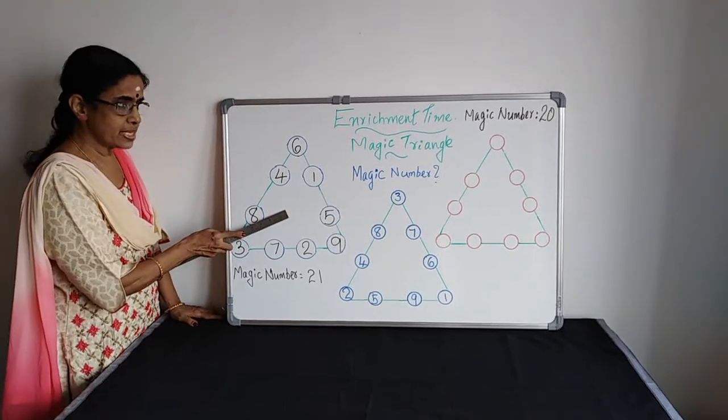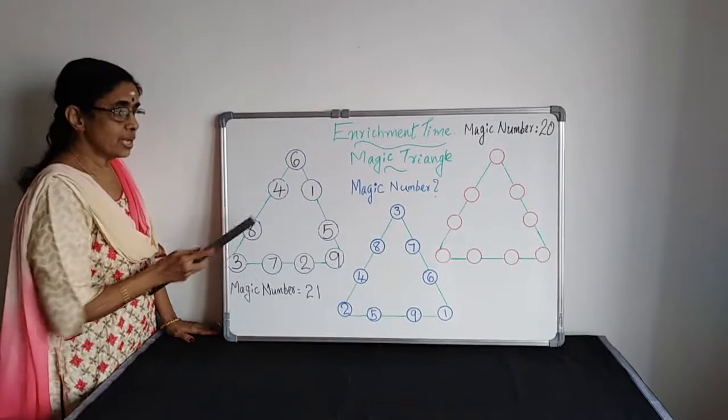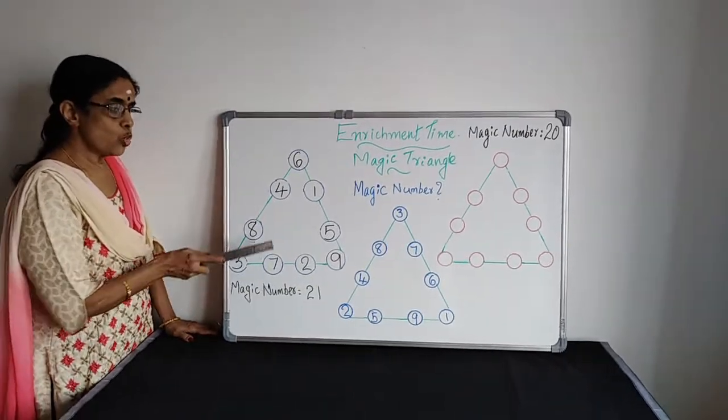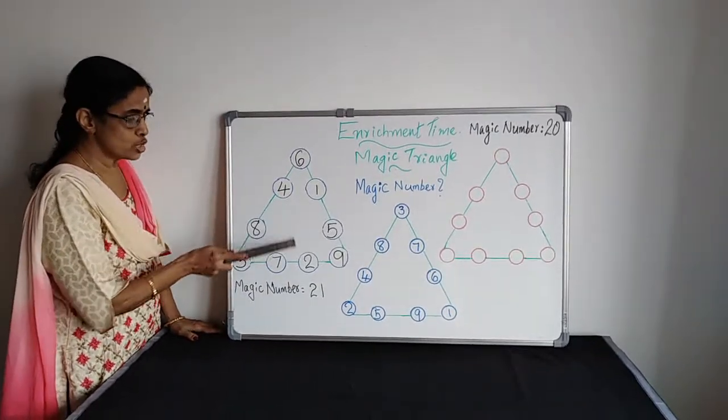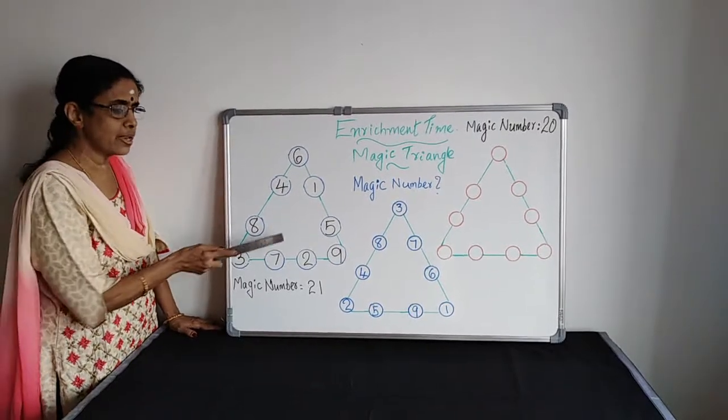If it is coming like this, it is called a Magic Triangle. Here we have used the numbers 1 to 9. We have used 1, 2, 3, 4, 5, 6, 7, 8 and 9.